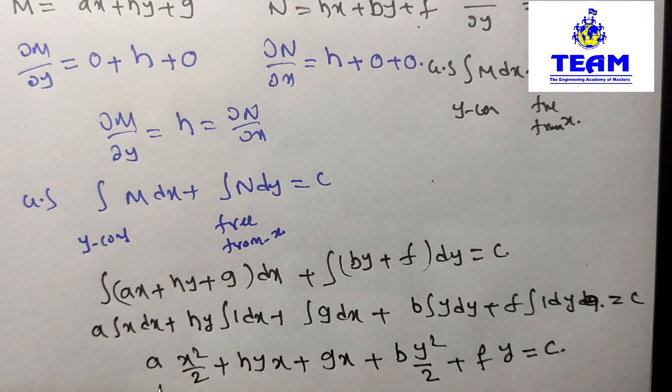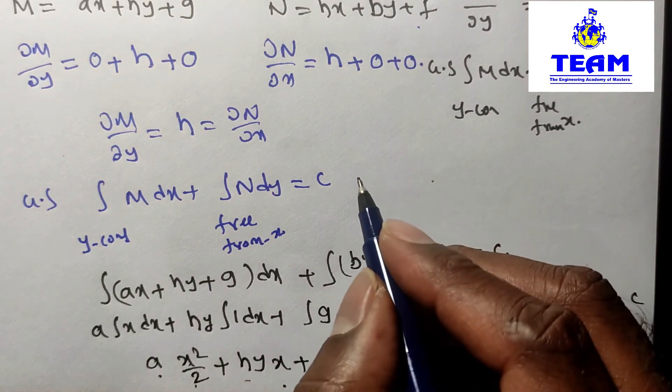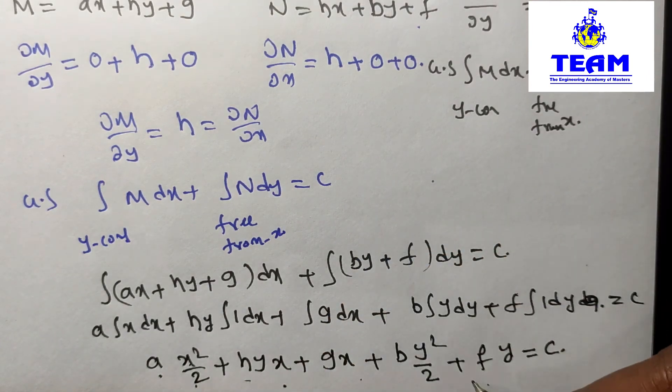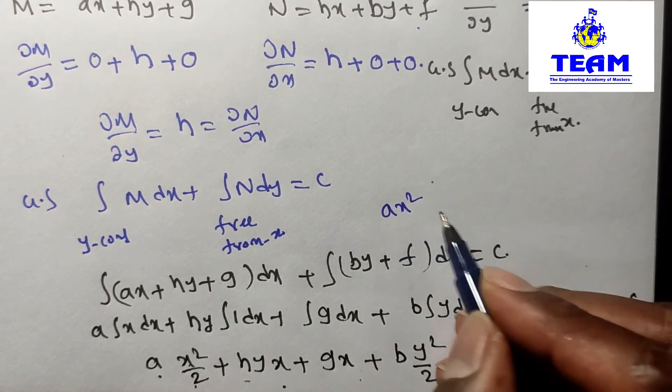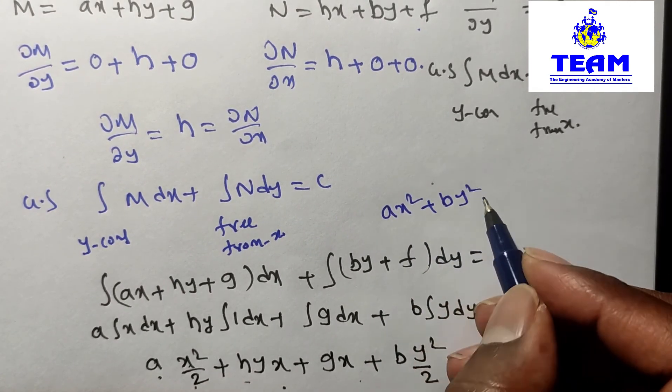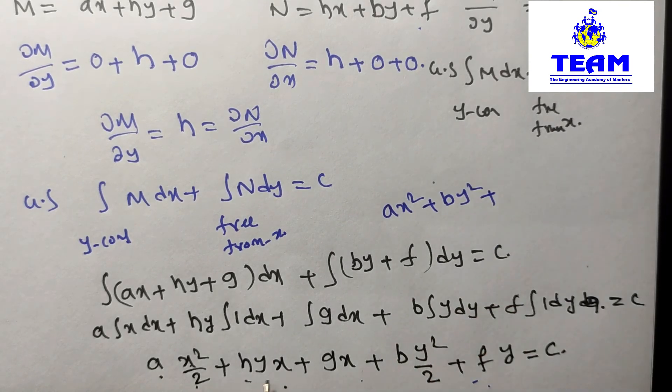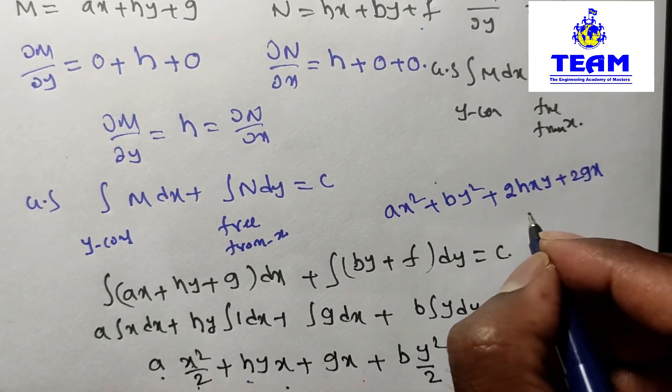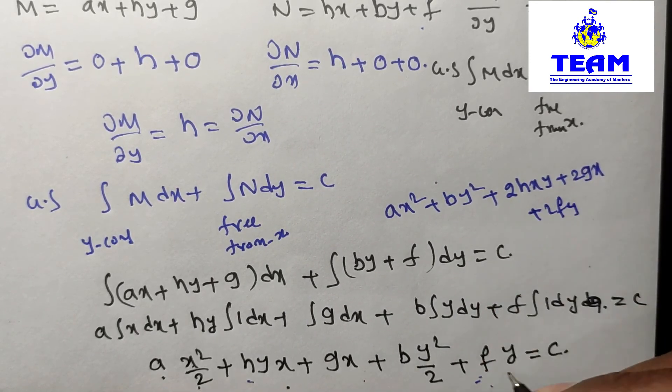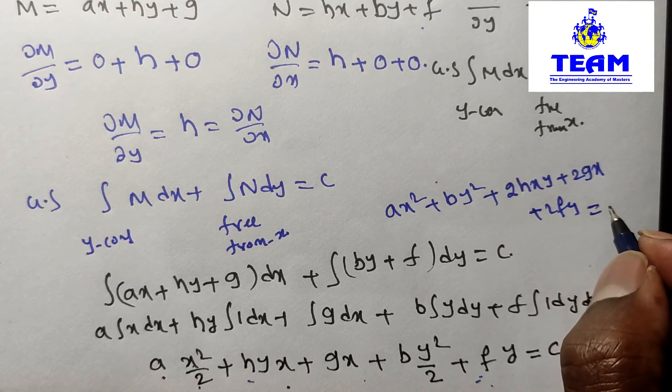Therefore here you observe: this is ax²/2 + by²/2 + hxy + gx + fy = C. You can take 2 as common. If you take 2 common, then we'll have 1/2 times, or you take 2 to the right side. Then you will have ax² + by² + 2hxy + 2gx + 2fy = 2C.